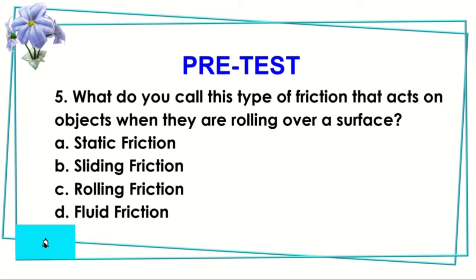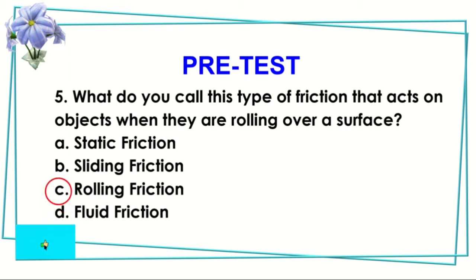Number five: What do you call the type of friction that acts on objects when they are rolling over a surface? Is it A. Static, B. Sliding, C. Rolling, or D. Fluid friction? Of course, the answer is rolling friction.